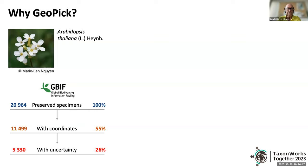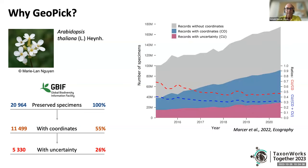Thus, we end up discarding 75% of the available records, since we do need to know the uncertainty to carry out rigorous distribution modeling. Digitizing collections data is time-consuming and expensive, but it is of utmost importance that the final result is not only faithful to the original collected specimen, but complete in information — and knowing the spatial uncertainty is of special relevance. Unfortunately, when we use collections data from GBIF, this example is not an exception, but the norm.